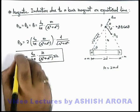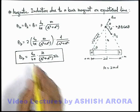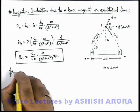This is quite a useful result for magnetic induction at an equatorial line, and here we can generalize it for a short dipole also.